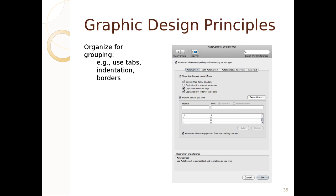Another way to organize for grouping is to rely on tabs, indentation, and borders. This image shows tabs: 'AutoCorrect,' 'Math AutoCorrect,' 'AutoFormat As You Type,' 'AutoText.' Checkboxes are indented to indicate they're related to a parent checkbox. This general grouping immediately communicates to your eye what's relevant and related — and when you uncheck a parent, related options should all gray out.